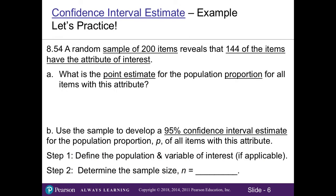Let's practice using problem 54 from the textbook. A random sample of 200 items reveals that 144 of the items have a particular attribute of interest. Very generic problem. What is the point estimate for the population proportion for all items with this attribute? So we'll go ahead and take our formula of x divided by n to get our sample proportion. So I'm going to take my 144 items divided by 200 items to get a sample proportion of 0.72.